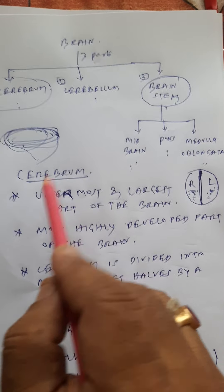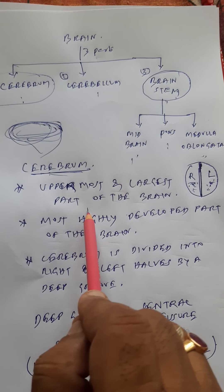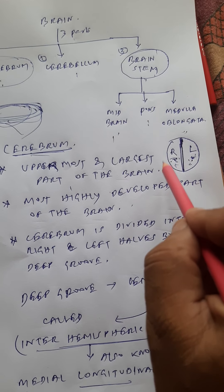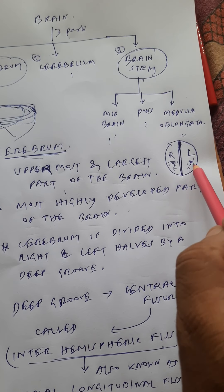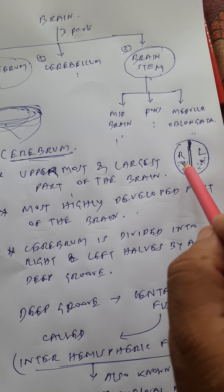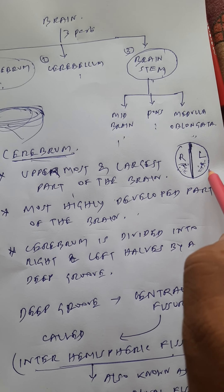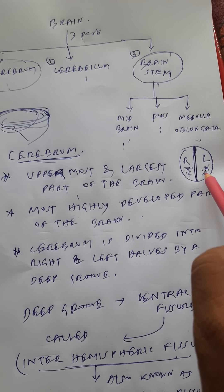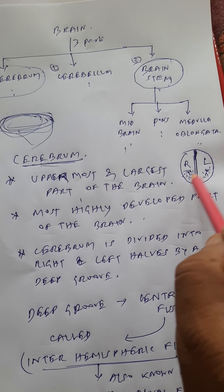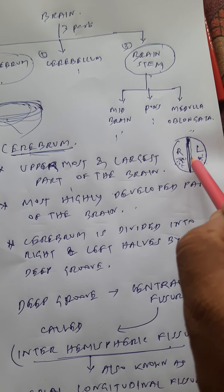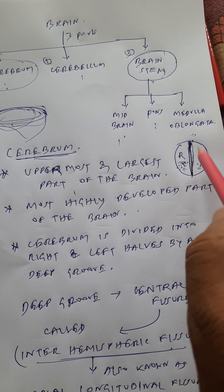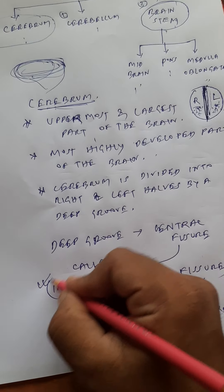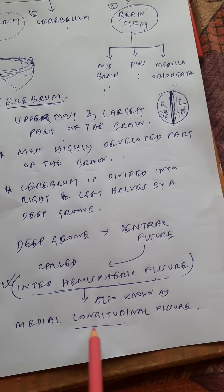Cerebrum is the uppermost, largest, and most highly developed part of the brain. It is divided into two halves — the right and left cerebral hemispheres — which are separated by the interhemispheric fissure, also known as the medial longitudinal fissure.